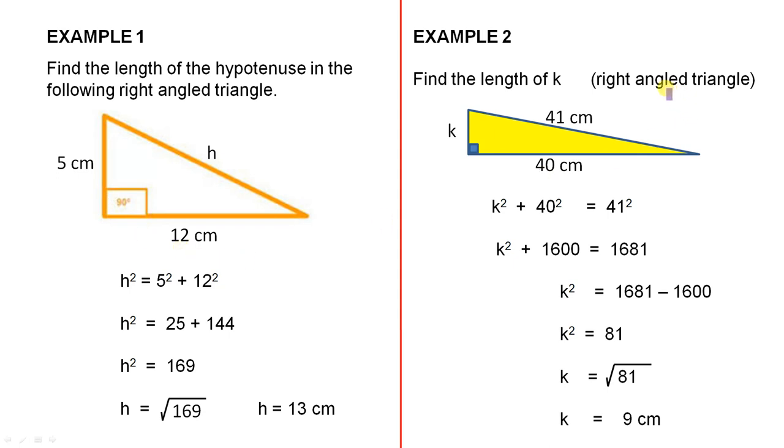For example two, we're asked to find the length of k, which is also a right angle triangle. Now it doesn't matter which side it can be, because in that example we saw the hypotenuse. Here it's just one of the other two sides. But the formula is the same.